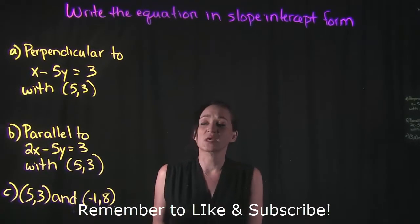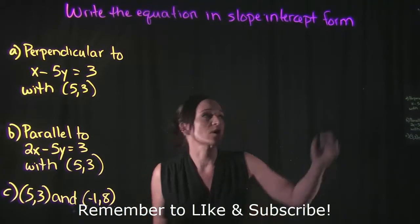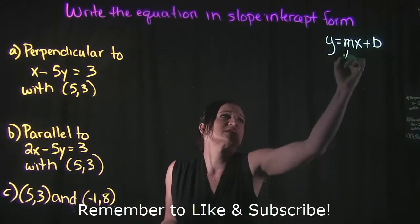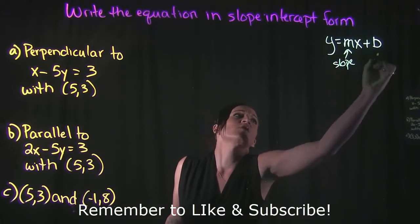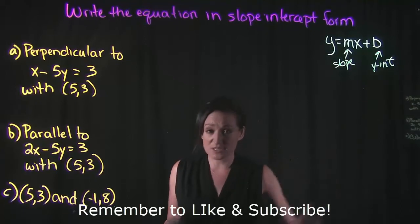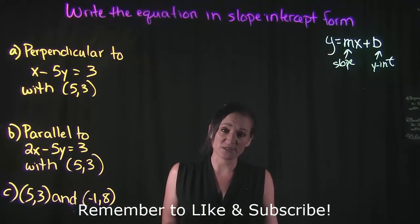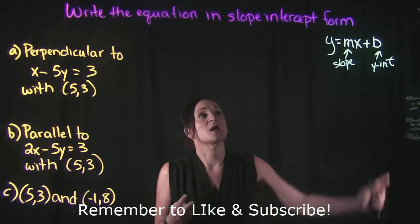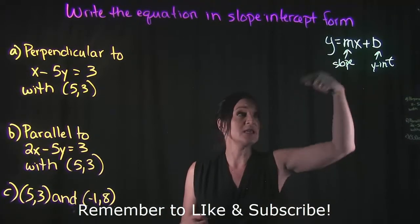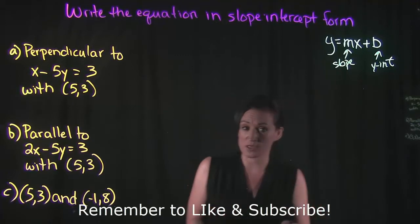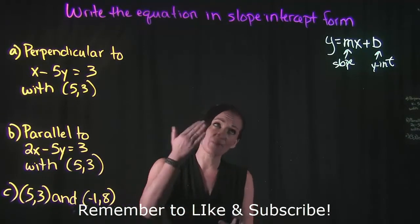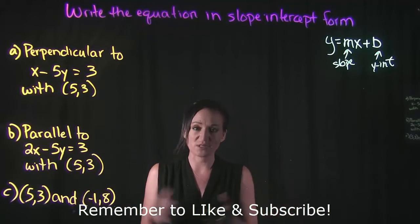For this video, we're going to take a look at a few different properties and write an equation of a line in slope-intercept form. Slope-intercept form looks like this: y equals mx plus b. We like slope-intercept form because it tells us the slope and the y-intercept. Those are the two things we need to input to write the equation of the line.